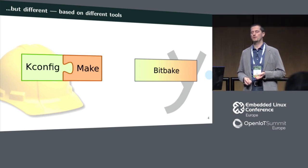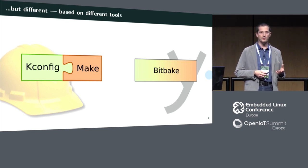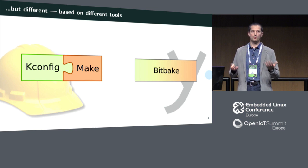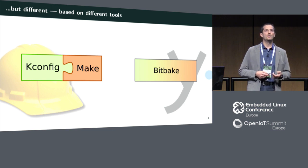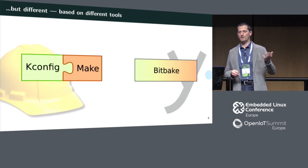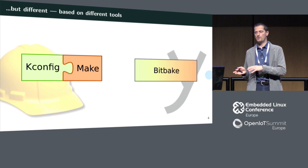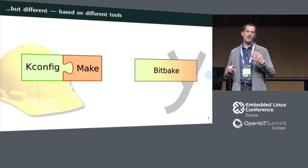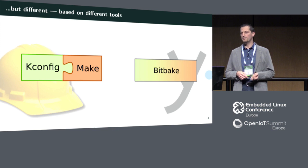Buildroot is built on top of two big pillars: the kconfig configuration system from the kernel, which you probably already know — this is used to configure what you want Buildroot to do — and then the well-known make tool to do the actual build. Yocto is completely different. It uses a single tool called BitBake, which is pretty much used only for that purpose. It is tailored to that use and has its own language. It doesn't have a real configuration engine, so configuration happens through source files.